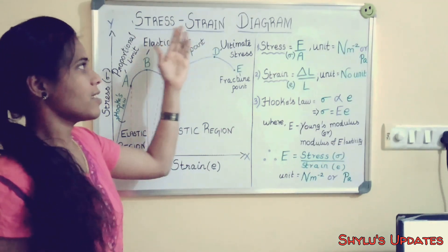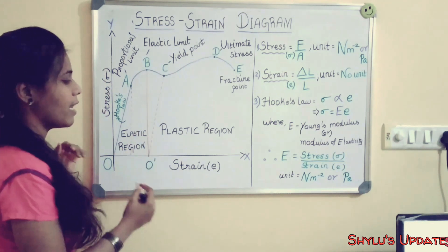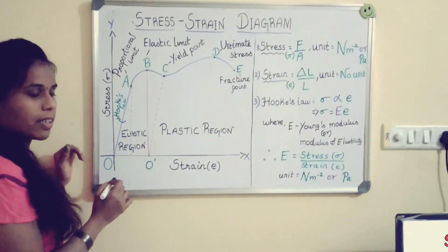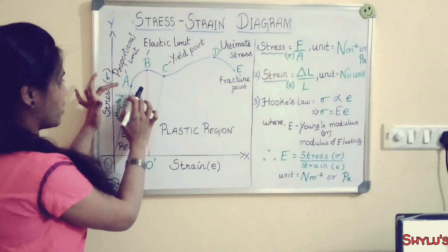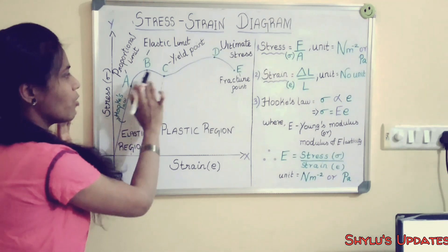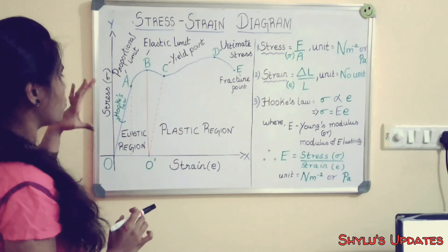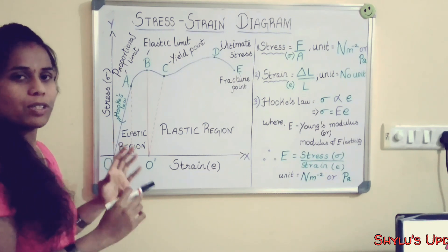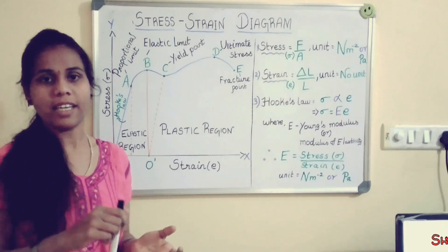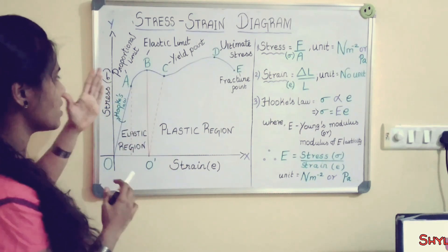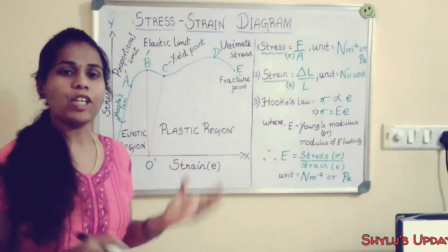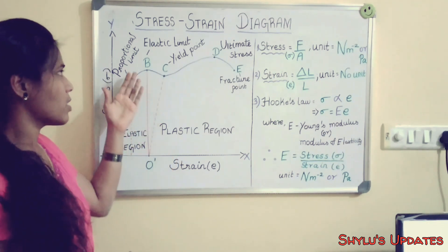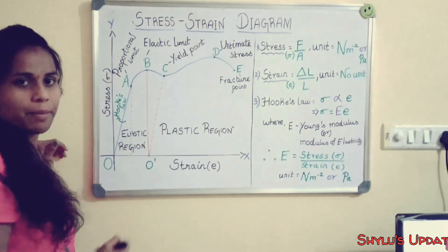Now let's see about the stress-strain diagram. In the stress-strain diagram, strain is given on the x-axis and stress is given on the y-axis. This is the origin point. The O to A point is a linear line — there will be no curve as in the other points. This O to A region obeys Hooke's law because here stress is directly proportional to strain. If you increase the stress, the strain also increases in this OA region. This line is linear, and when the stress is removed, the material regains its original shape. This point A is called the proportional limit.